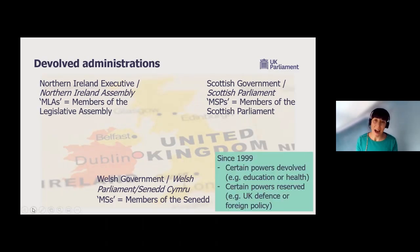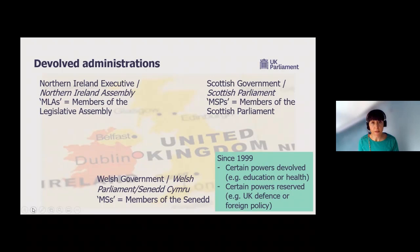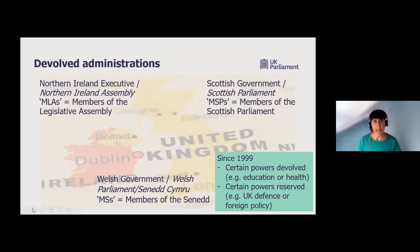Some powers are devolved to those devolved administrations. The powers that are devolved are regulated or legislated on locally, and those that are reserved and decided on in the UK Parliament tend to affect the country as a whole — things like defence, foreign policy, and nuclear energy. Hopefully throughout this session you'll get much more of an insight about the policy areas that are devolved to each area, how those legislatures or assemblies work, and how you as researchers can get involved with those different legislatures.